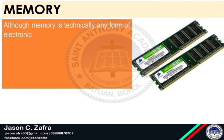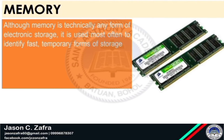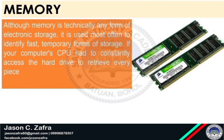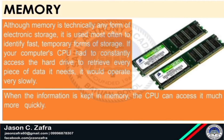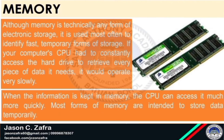Although memory is technically any form of electronic storage, it is used most often to identify fast, temporary forms of storage. If your computer's CPU had to constantly access the hard drive to retrieve every piece of data it needs, it would operate very slowly. When the information is kept in memory, the CPU can access it much more quickly. Most forms of memory are intended to store data temporarily.